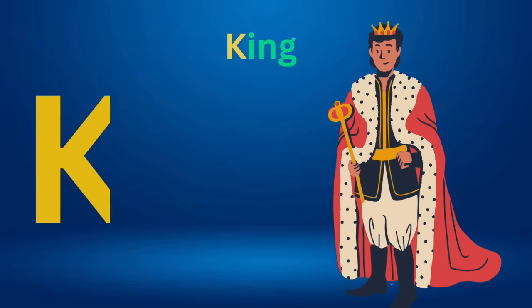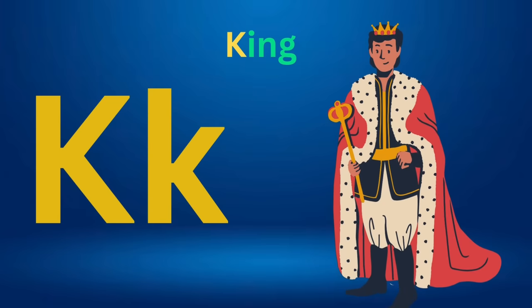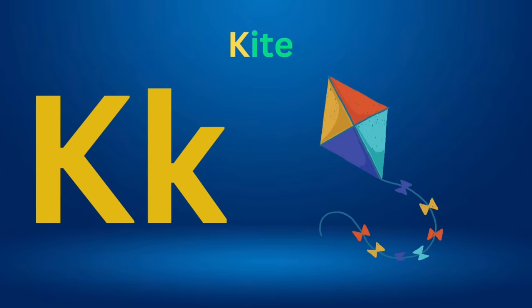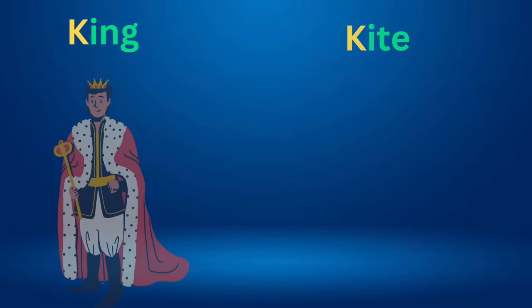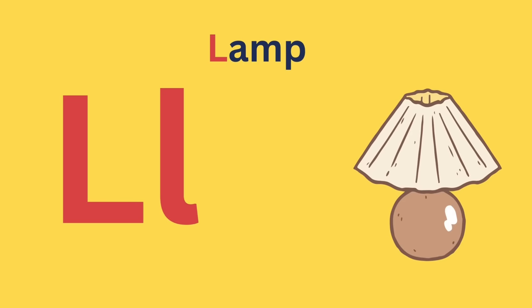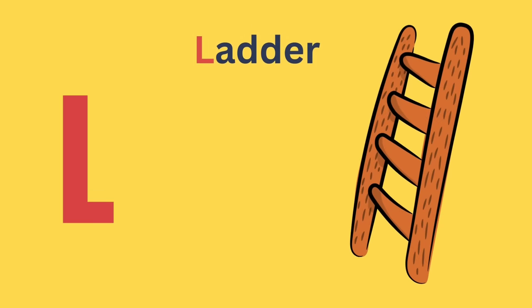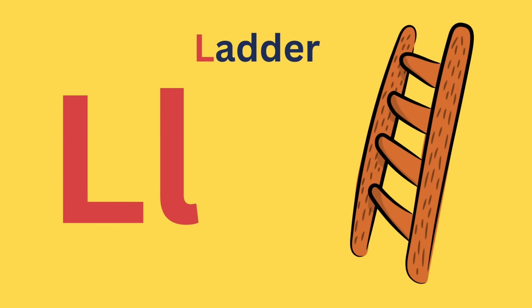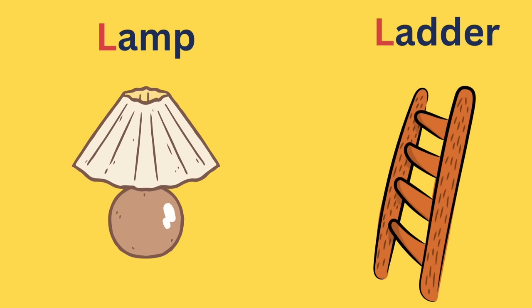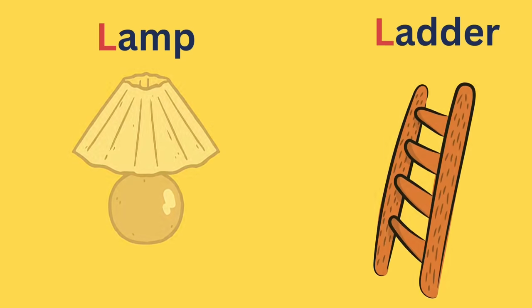K for king. K for kite. K for king and K for kite. L for lamp. L for ladder. L for lamp and L for ladder.